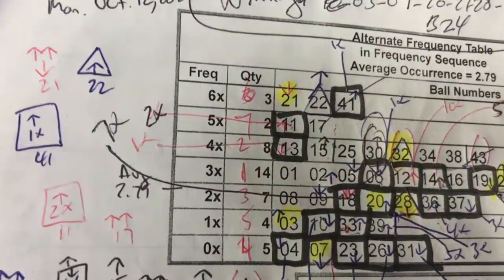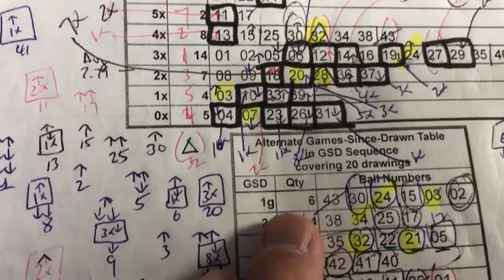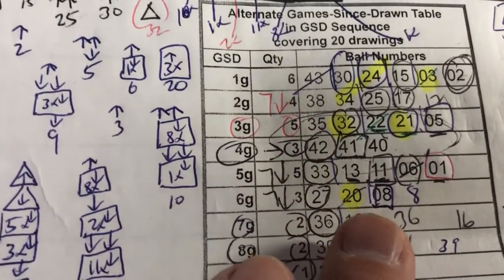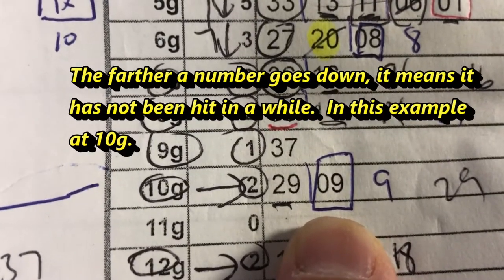On October 12th, I would look down here. Down here, you see that I drew a square around number nine.